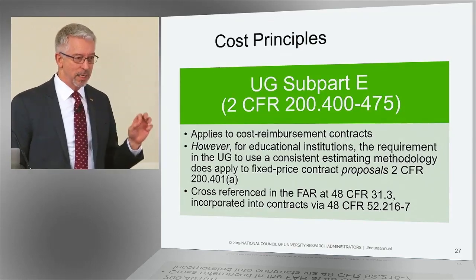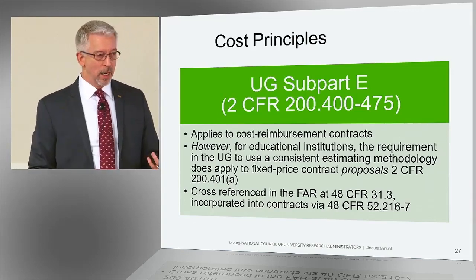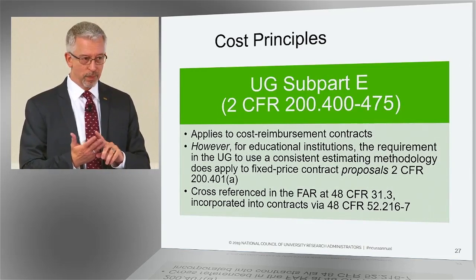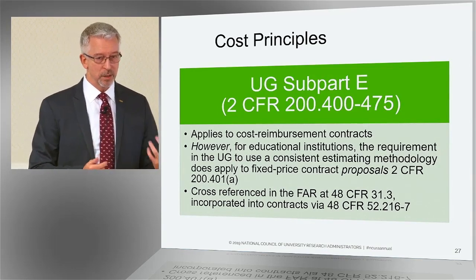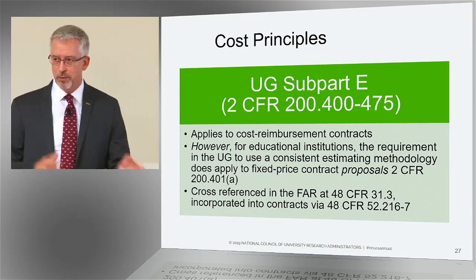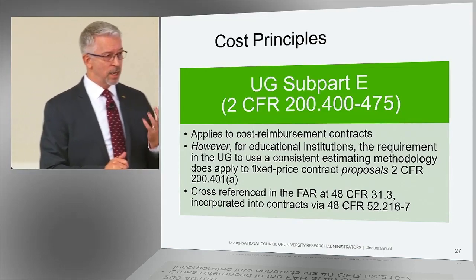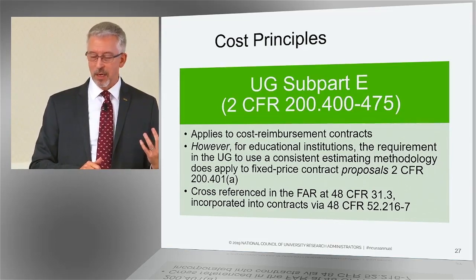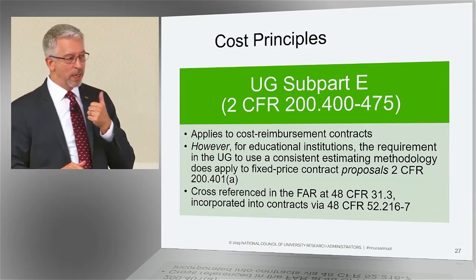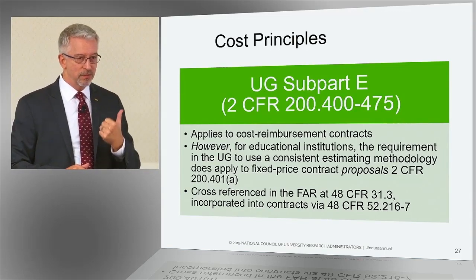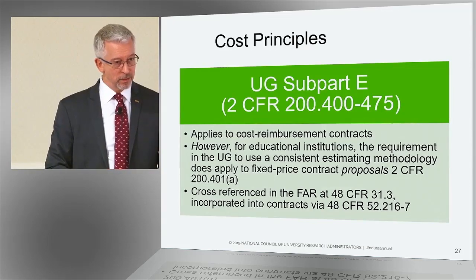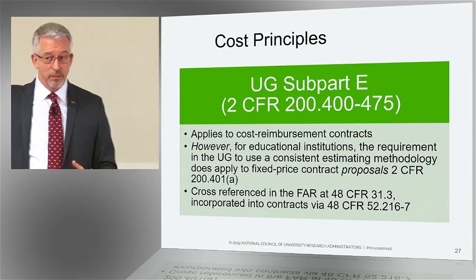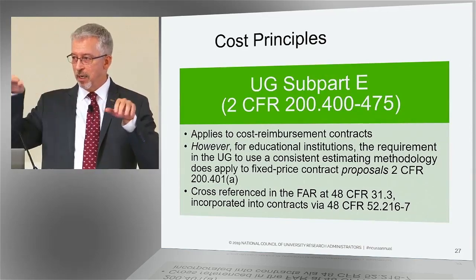What that actually means is, when you're putting together a grant proposal, you're supposed to follow three basic standards in the process of putting together the cost proposal. When you propose a cost — this is the life cycle of a cost — it needs to follow the same methodology in proposing it as you do in charging it and in reporting it. You can't vary the methodology.